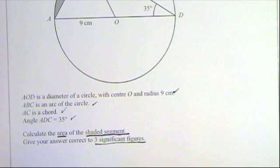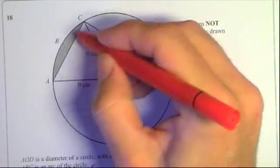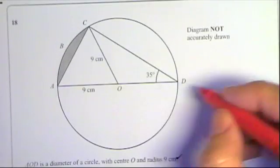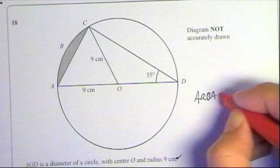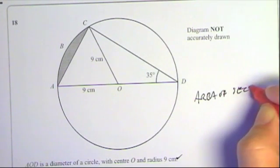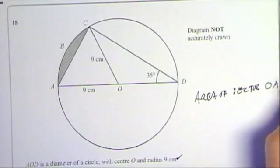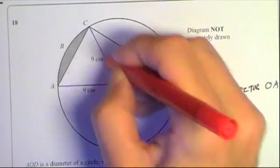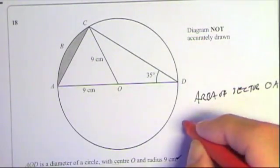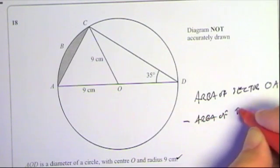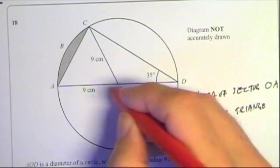So that's all checked. To find the area of the shaded segment, I'm going to do area of sector OABC — the sector with that arc in it — and take away the area of triangle OAC.